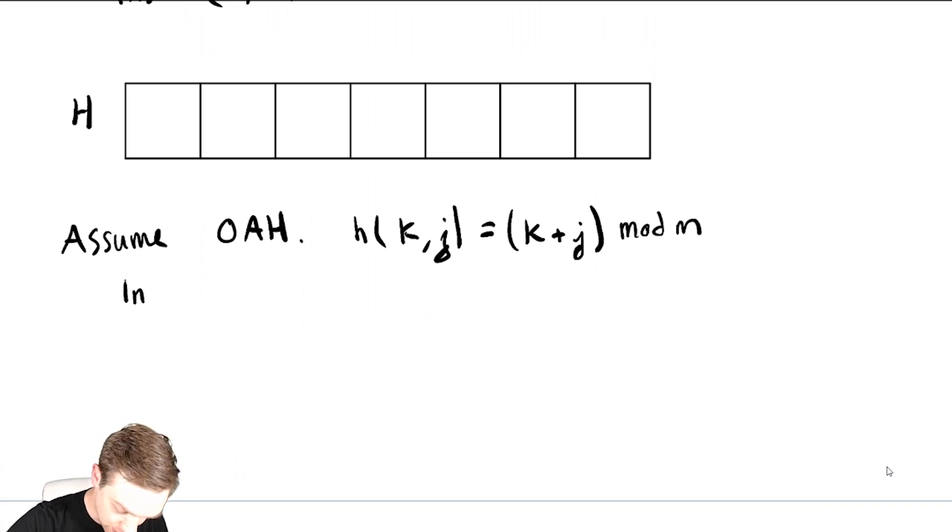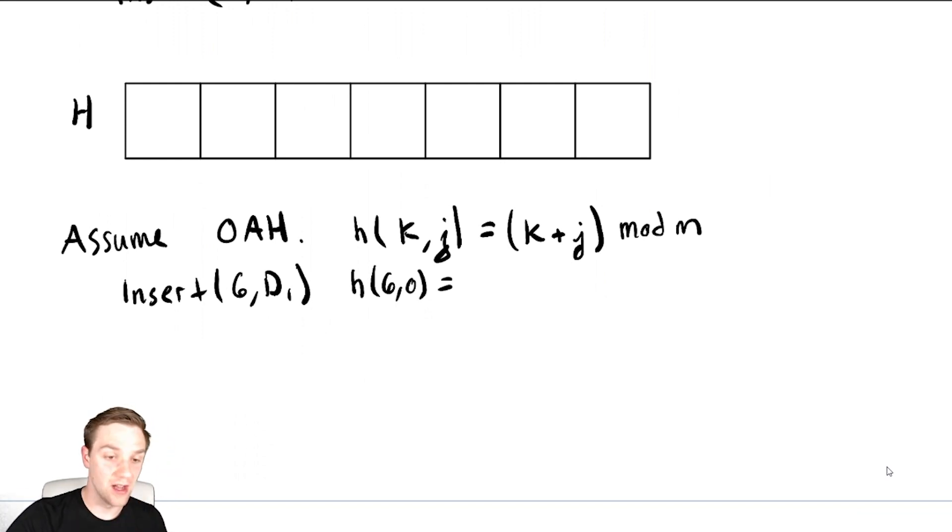So let's say we need to do an insert with 6, d1. We need to compute h of 6, 0, which is 6 mod m, which is just 6. This has an array of size 7, which means that the locations are 0, 1, 2, 3, 4, 5, and 6. So this must go in this location here.